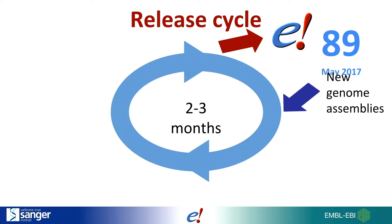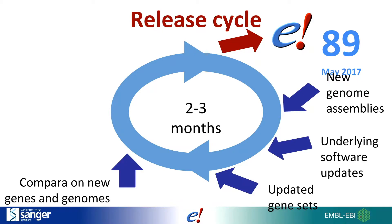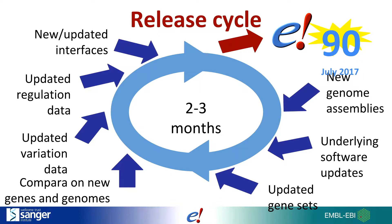Ensembl has a release cycle of every two to three months. This involves updating the genomes, the underlying software, the gene trees, variation and regulation data, plus any new tools and interface updates. We release in cycles like this so you'll always be able to go back to past releases and find the same version of the data you did your initial analysis on.